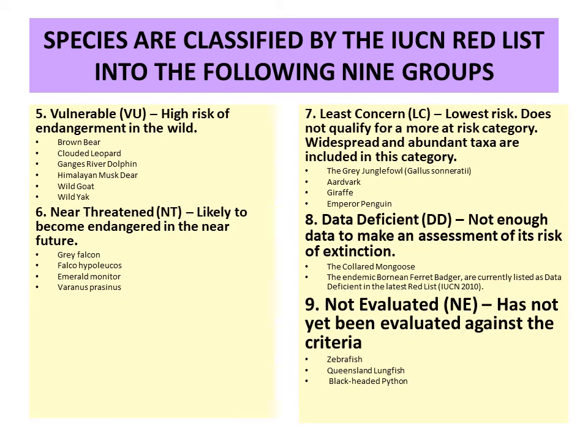The seventh category is least concern — the lowest risk. These species have a large population that is widespread and abundant. Examples include the grey junglefowl, aardvark, giraffe, and emperor penguin.